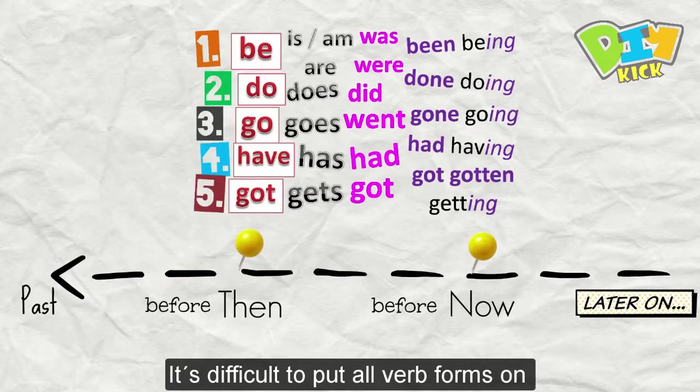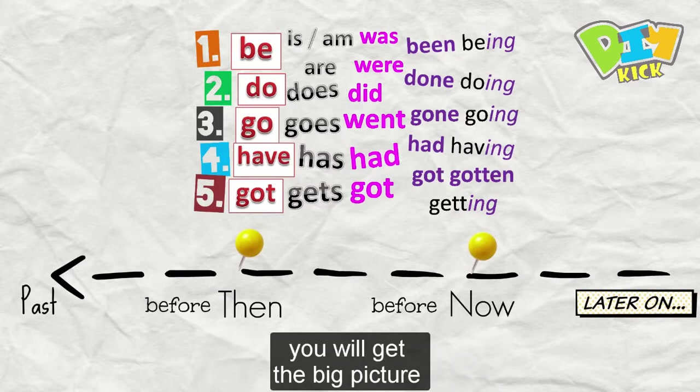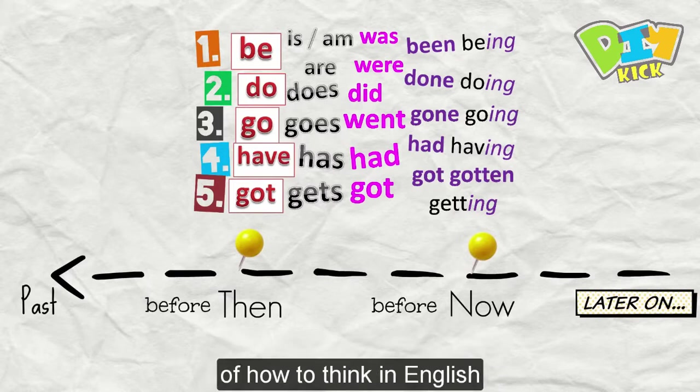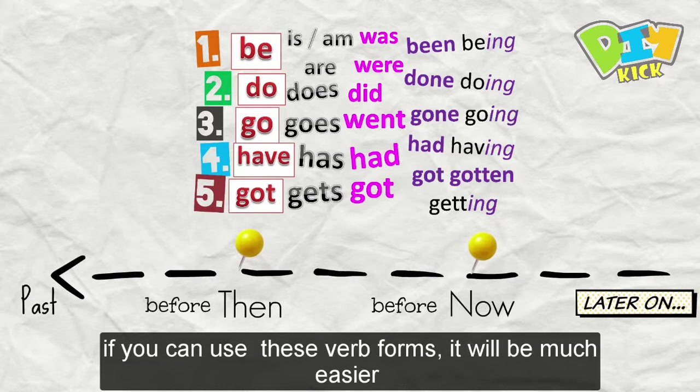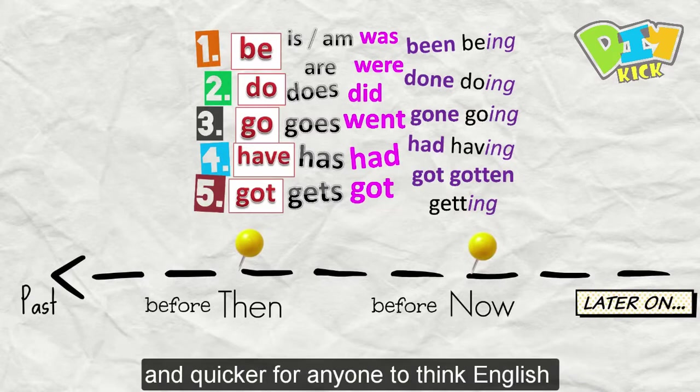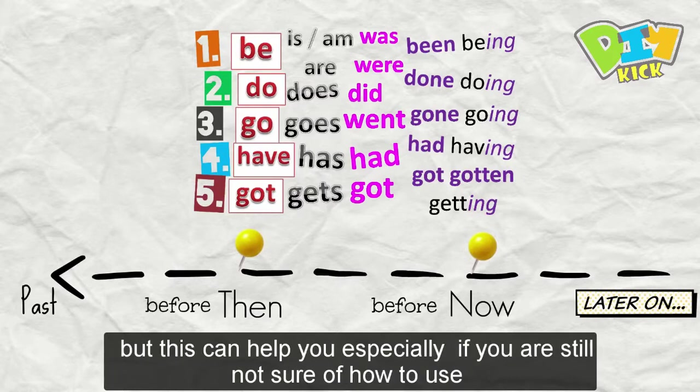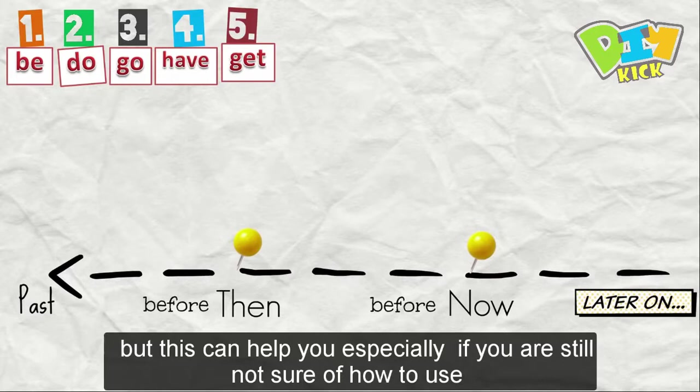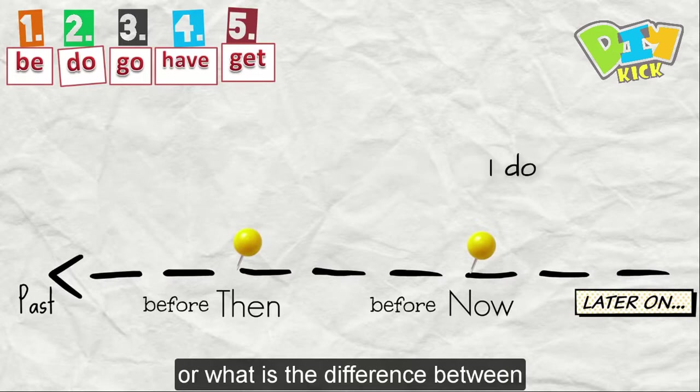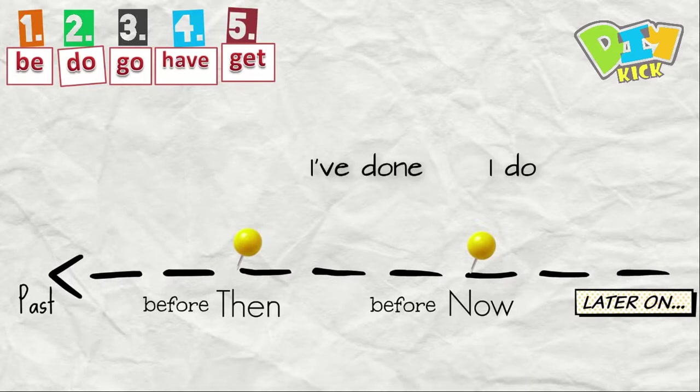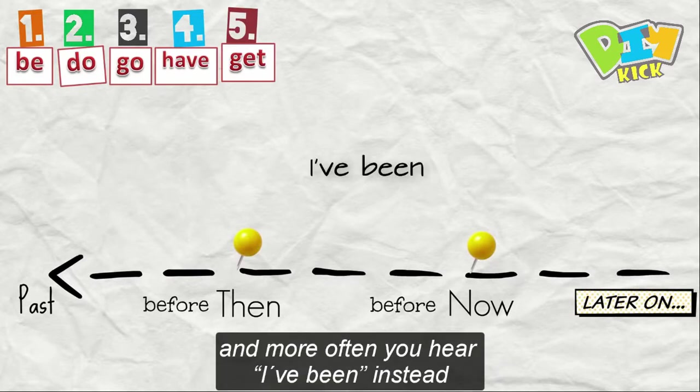It's difficult to put all verb forms on one slide so I hope using this timeline you will get the big picture of how to think in English. To summarize it, the point is, if you can use these verb forms, it will be much easier and quicker for anyone to think English. There is so much more to learn to become a fluent speaker, but this can help you, especially if you are still not sure of how to use I'm being, I've been or what is the difference between I do and I've done or I was doing.